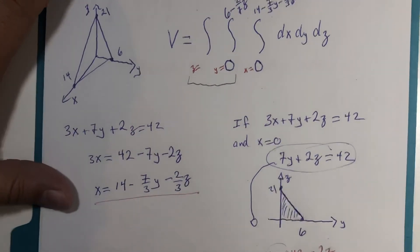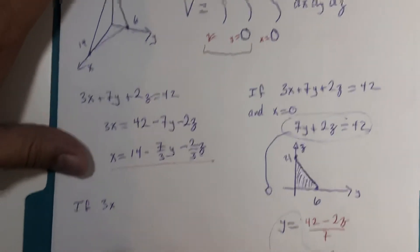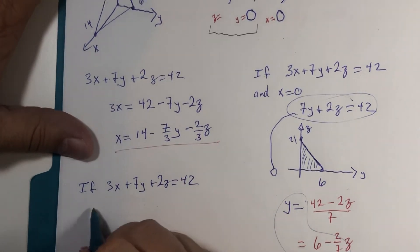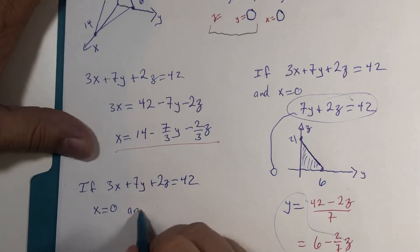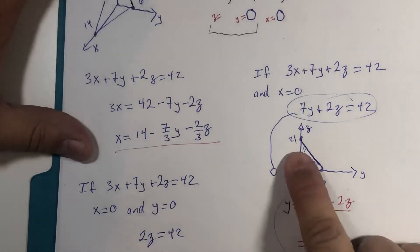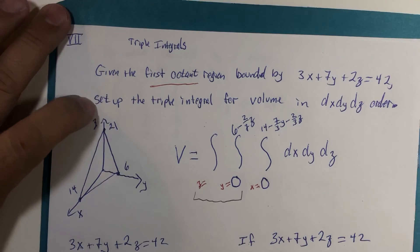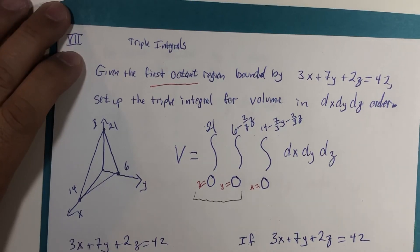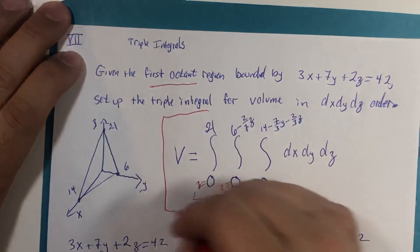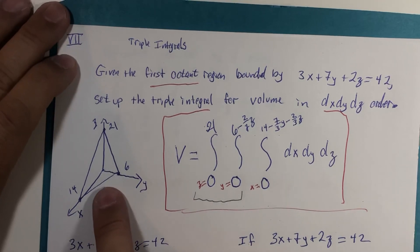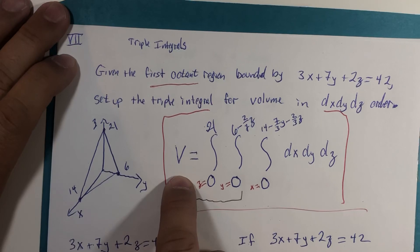Finally, if 3x plus 7y plus 2z is 42 and we already let x be 0 and now if we let y become 0 we get 2z is 42 and z is 21, which is no surprise because that is where this three-dimensional graph hit on the z-axis. So z goes from 0 to 21 would indeed be our limits of integration for z. This is the triple integral for volume for that first octant planar region calculating volume.